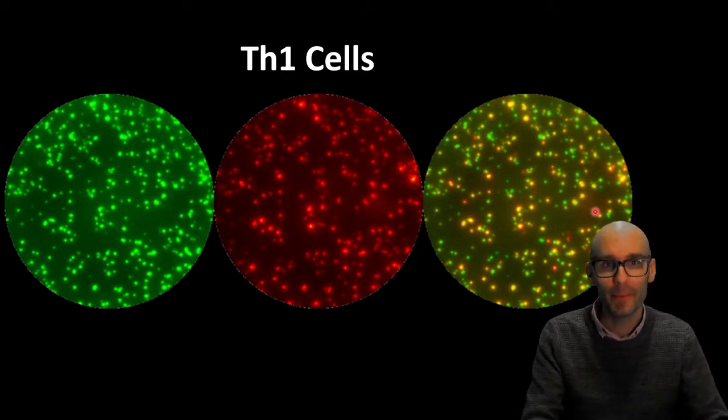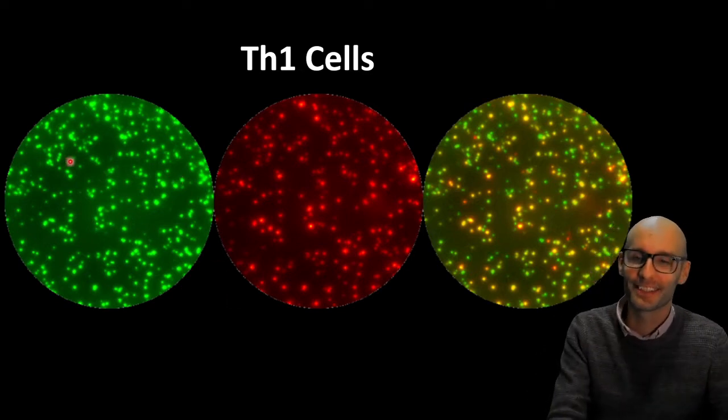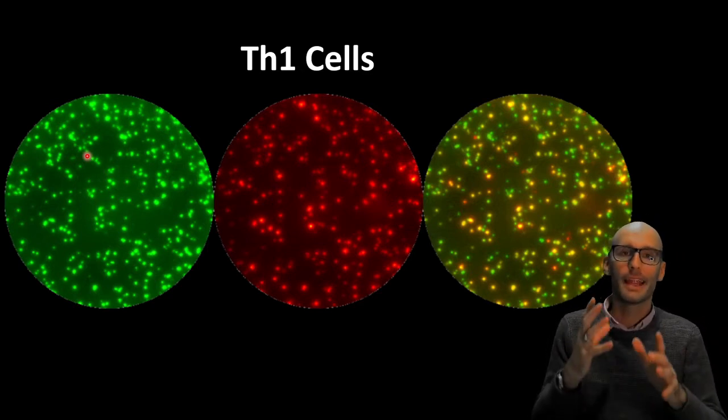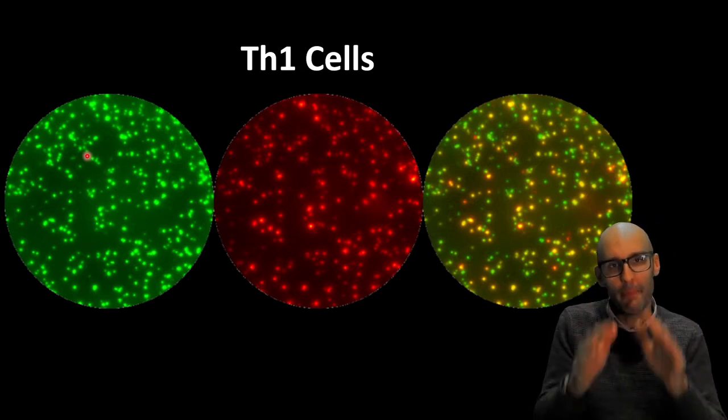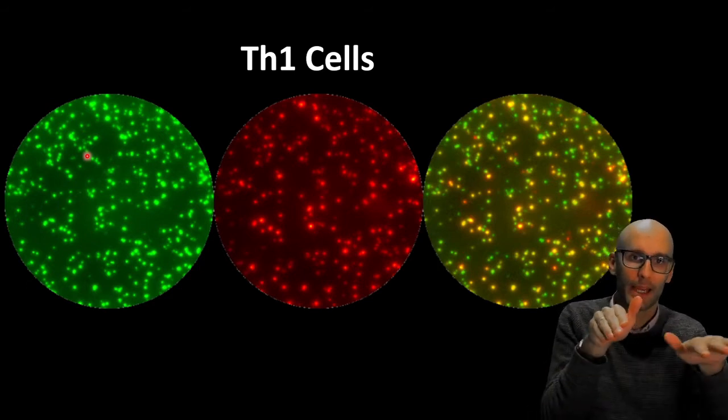And in this image here, we've got what's called an ELISA spot. I'm just going to start with a quick breakdown of it because it's such a beautiful image. Now, an ELISA spot is a little bit like an ELISA, except imagine that the cell is sitting on a layer of capture antibodies.